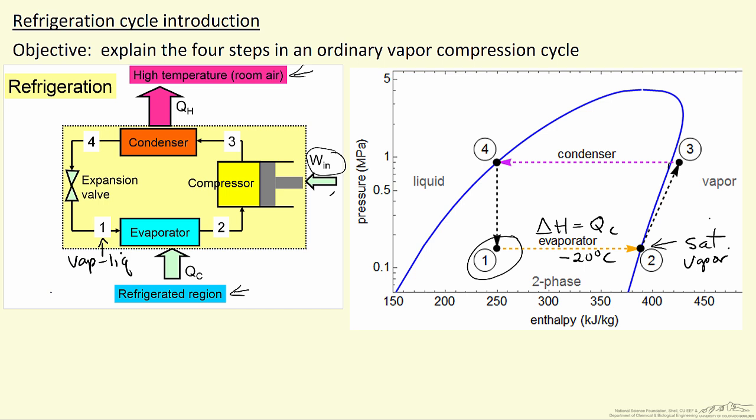We now take this saturated vapor and we use a compressor. We put work into the system and use a compressor to raise the pressure from low pressure to higher pressure. In this case we've increased the pressure from 0.15 MPa to about 0.9 MPa, and so the energy balance for this step is delta H is equal to W. This step is assumed to be adiabatic.